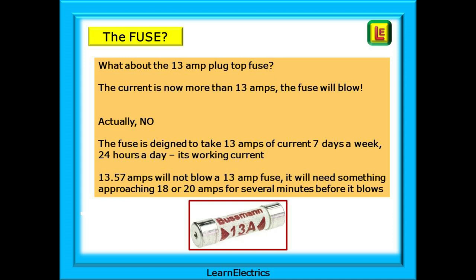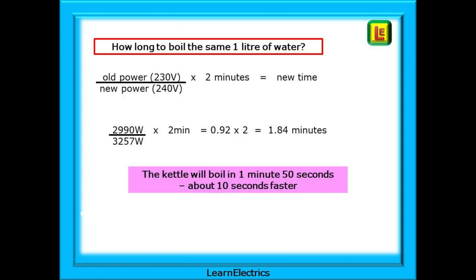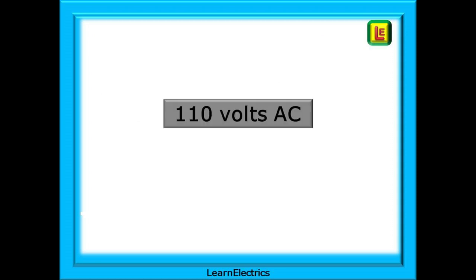The fuse will need something approaching 18 or 20 amps before it blows. So a kettle drawing just over 13 amps for only a few minutes will not cause the fuse to blow. To find the new boiling time at 240 volts, divide the original 230 volt power by the new 240 volt power and multiply by two minutes: 2,990 watts divided by 3,257 watts, multiplied by two, gives 1.84 minutes — that's 1 minute and 50 seconds, about 10 seconds faster.